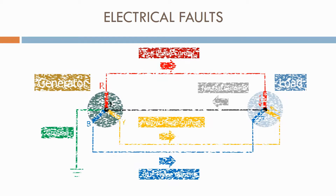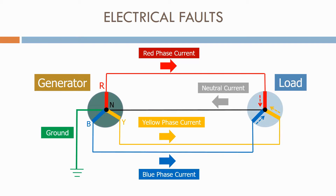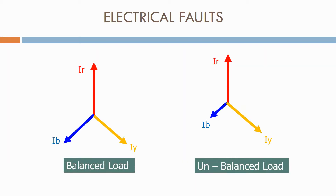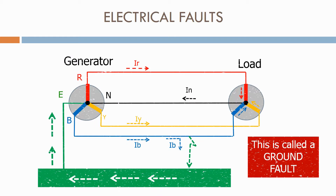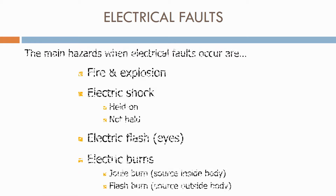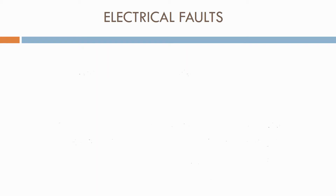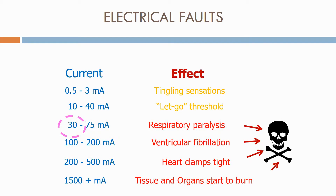In the next section, we look at electrical faults. We start by looking at a healthy three-phase network and how the currents behave in a balanced and unbalanced system. We then look at the different possible faults that can occur, and see what happens to the currents under each scenario. We then look at the effects of an electrical fault on the human body, starting with the main hazards, before looking at how the effects on the body increase when the current increases.